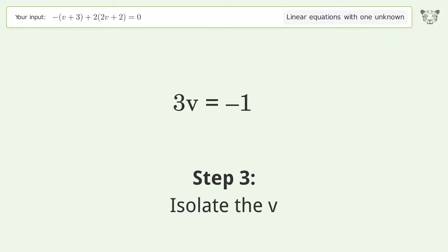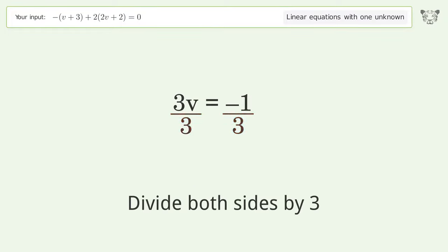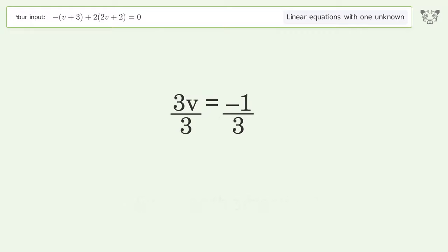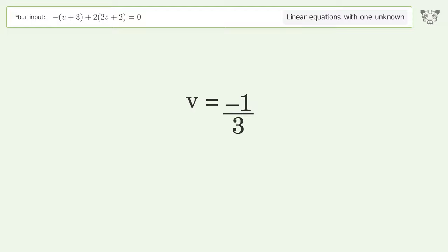Isolate the v: divide both sides by 3. Simplify the fraction. And so the final result is v equals negative 1 over 3.